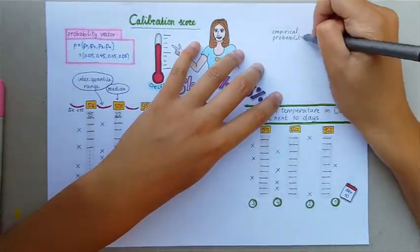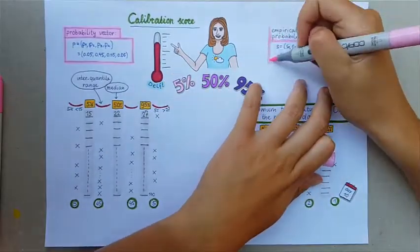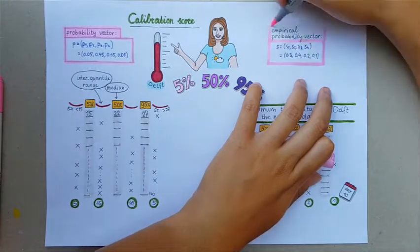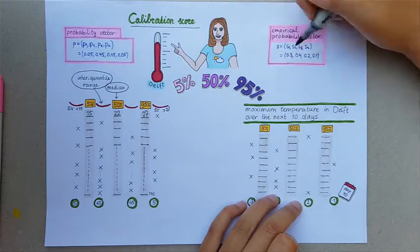This leads to the vector of observed proportion of realizations S, which is (S1, S2, S3, S4) equal to (0.3, 0.4, 0.2, 0.1).